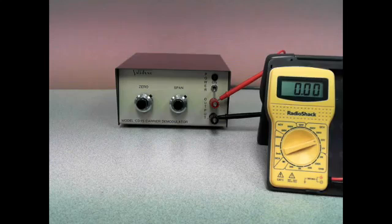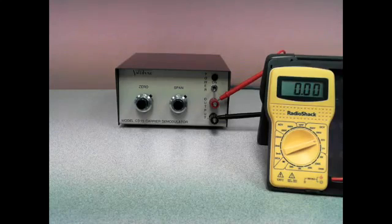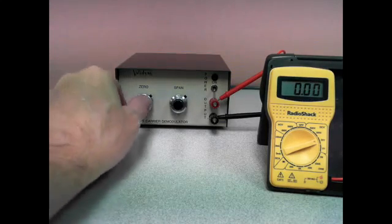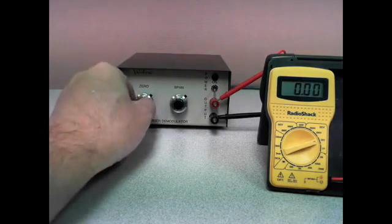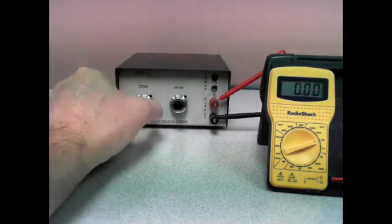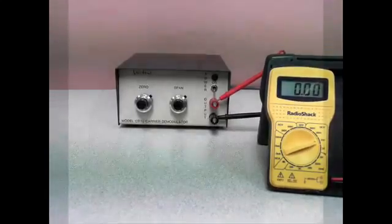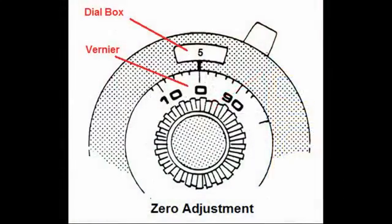Now we turn the zero adjustment such that the number five appears in the dial window. Next, turn the span adjustment until the number 10 appears in its dial window.